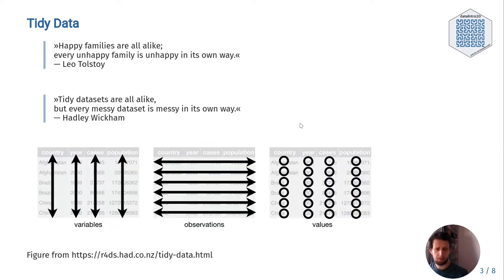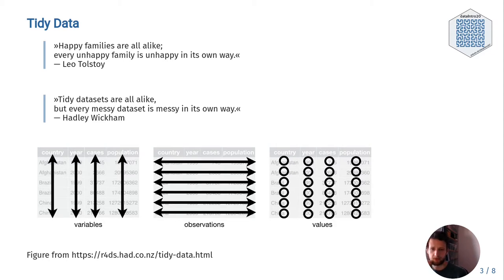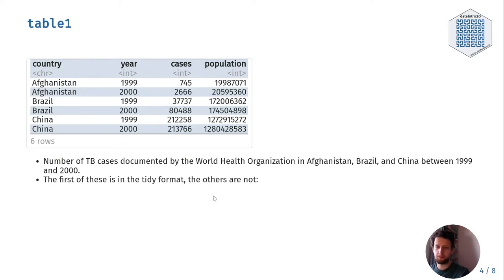So let's look at a basic definition of tidy data. You can recognize a tidy data frame by noticing that all the columns represent variables — for example, country, year, cases, and population. This is data from the World Health Organization on tuberculosis between 1999 and 2000. Each row consists of observations of these variables, and consequently every cell is one value — the value of the observation of that variable.